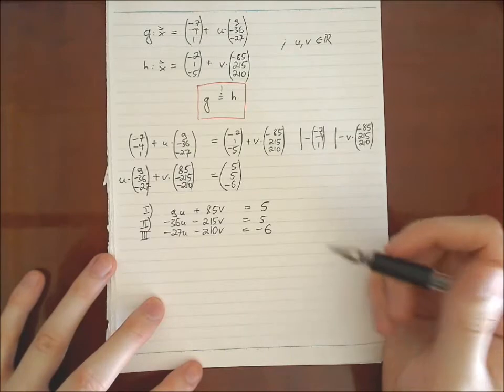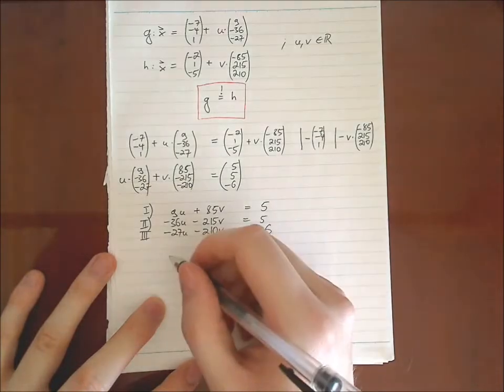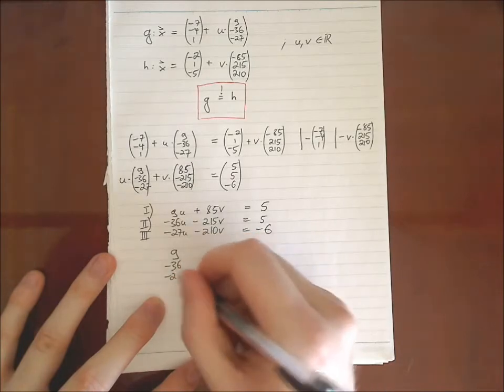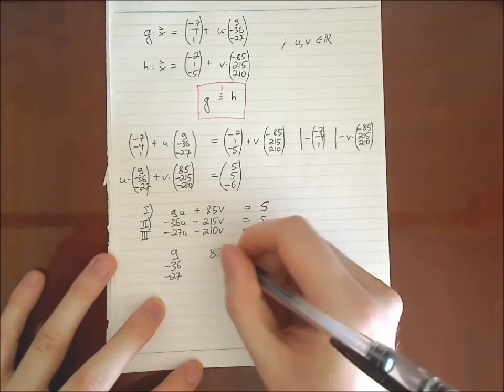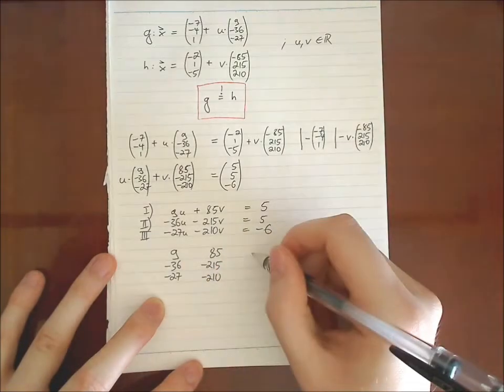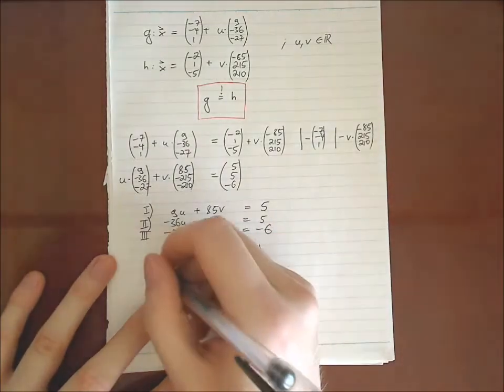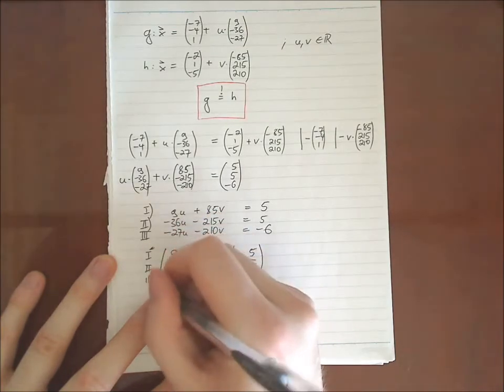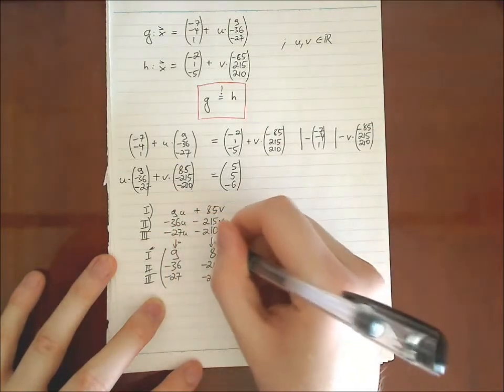So we have three equations. And what we want to do is, to solve it, we use the Gaussian algorithm. And so we just write it as a matrix. We have nine, minus 36, minus 27. Then we have 85, minus 215, minus 210. So this is our system, our matrix. Three equations that we have to solve. And remember this is u, this is v.